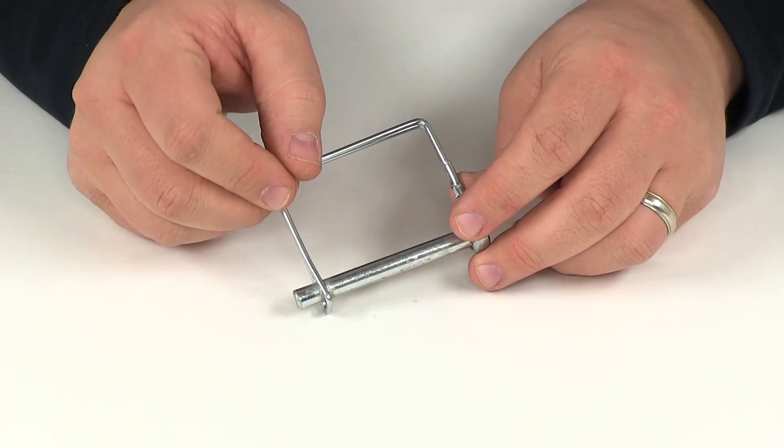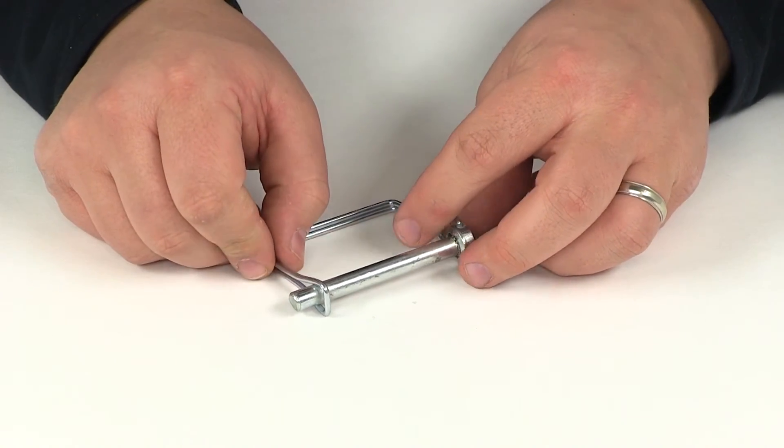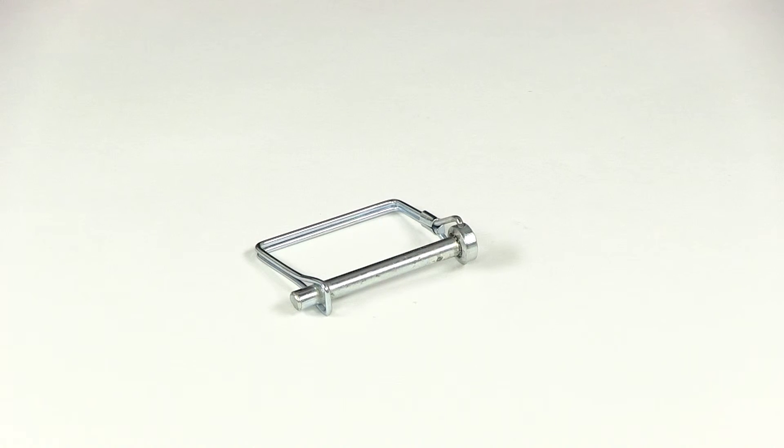That's going to do it for our review of part number 516-214. This is Redline's snapper pin with a five sixteenths inch pin diameter.